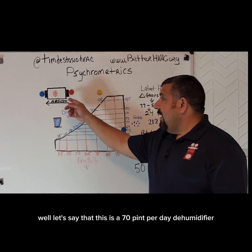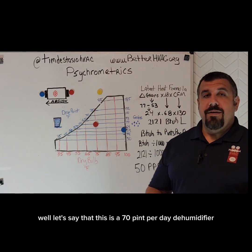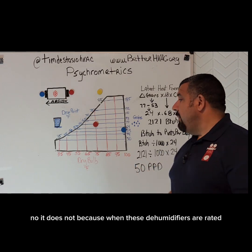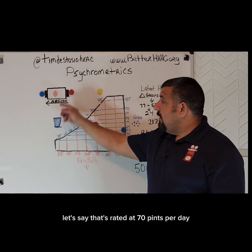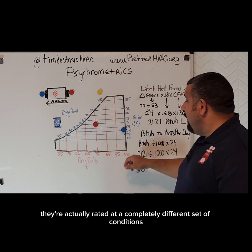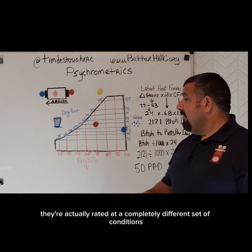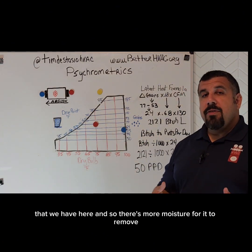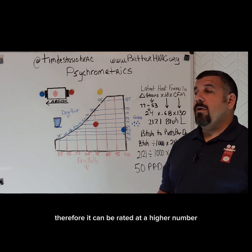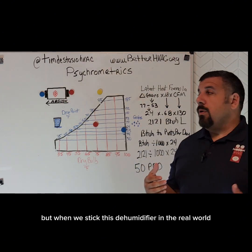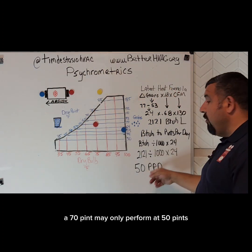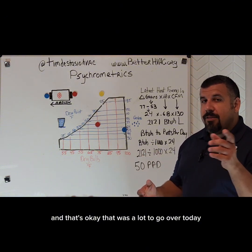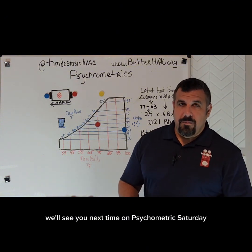Let's say this is a 70 pint per day dehumidifier. Does that mean the dehumidifier is not performing correctly? No, it does not. Because when these dehumidifiers are rated at 70 pints per day, they're rated at a completely different set of conditions — there's more moisture for it to remove, so it can be rated at a higher number. But when we stick this dehumidifier in the real world, a 70-pint unit may only perform at 50 pints, and that's okay. That was a lot to go over today. Thanks for your patience — we'll see you next time on Psychometric Saturday.